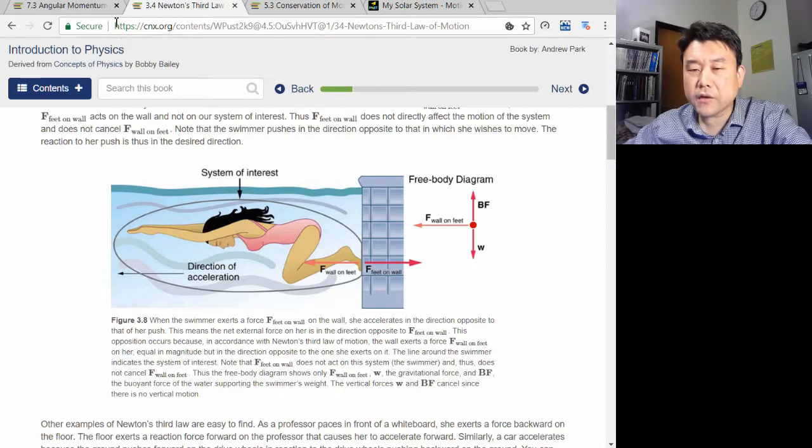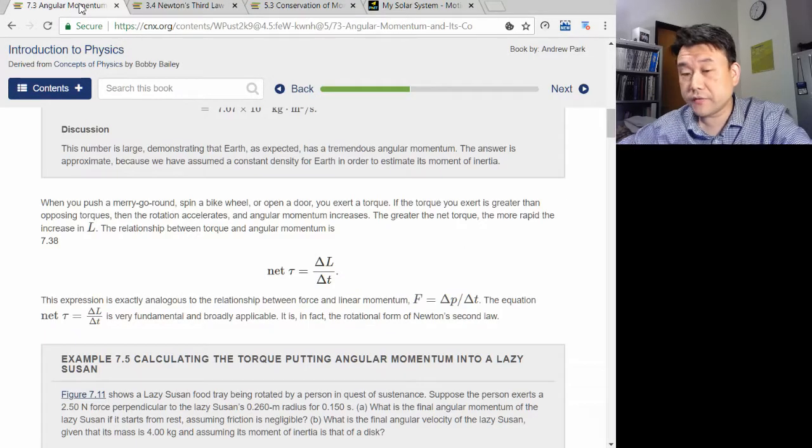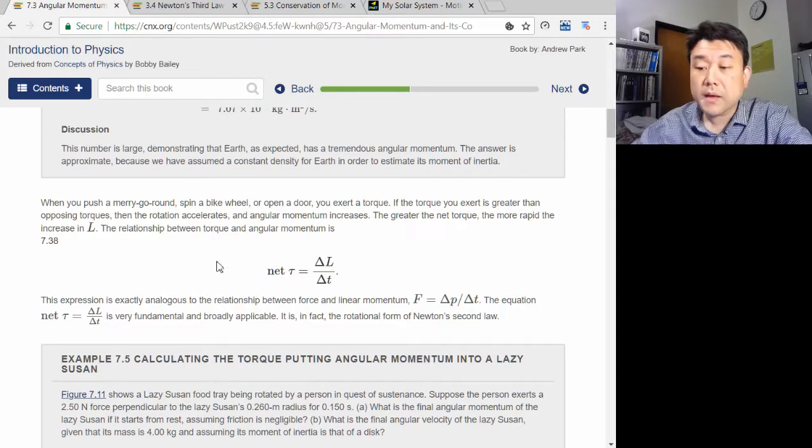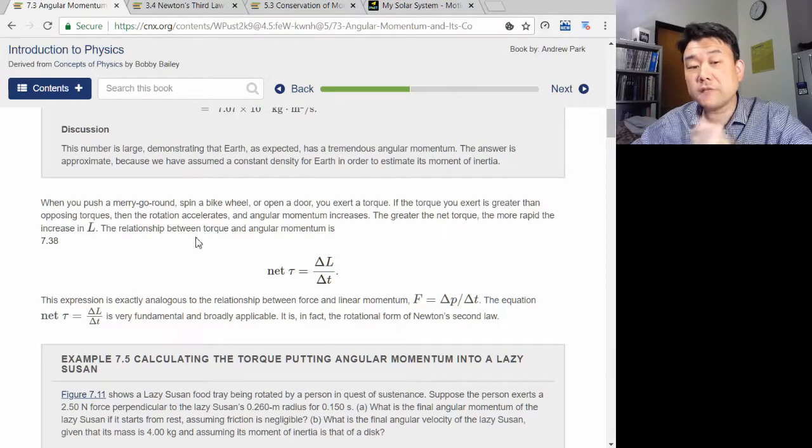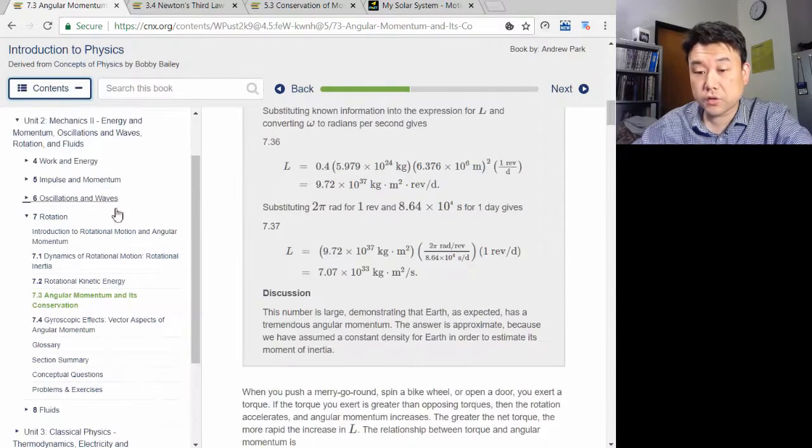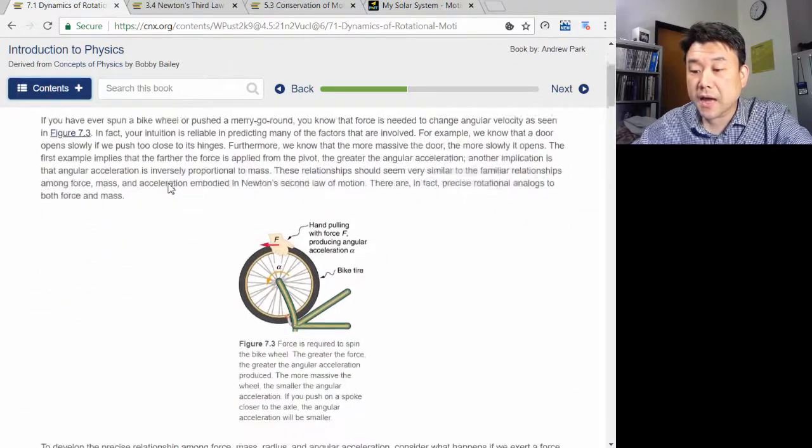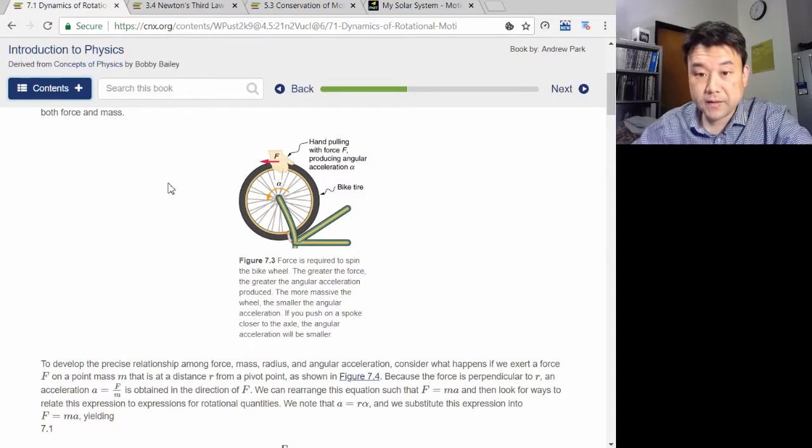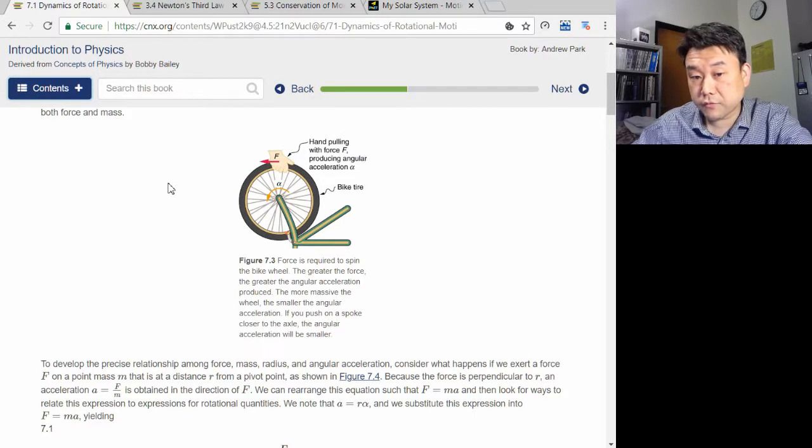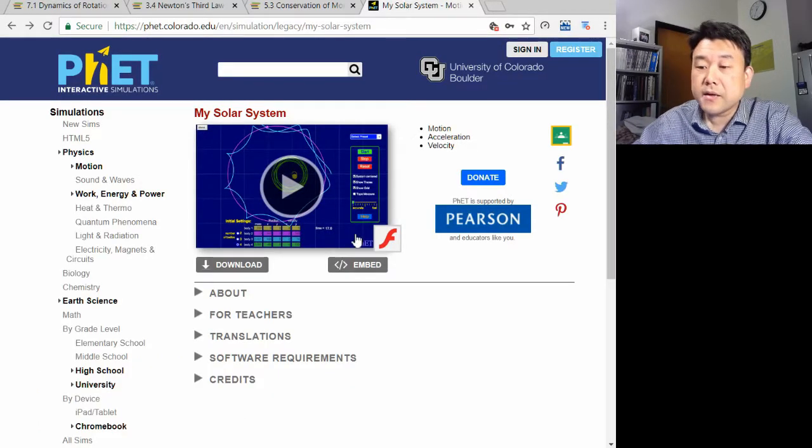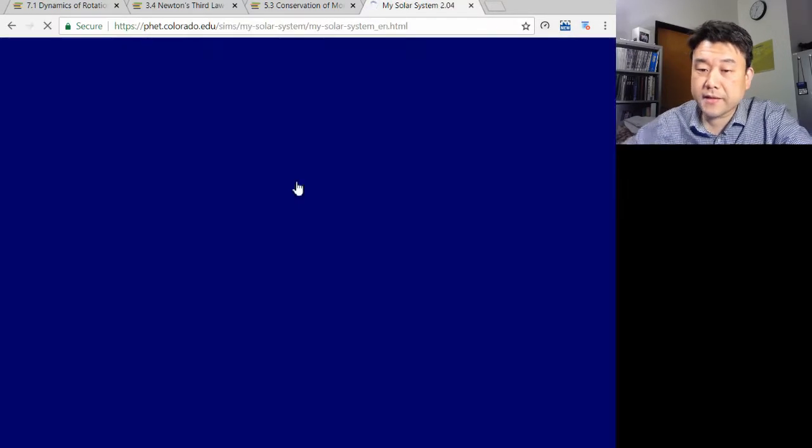Another way angular momentum can be conserved is if the applied torque is zero. And you can have zero torque with non-zero force. If you remember, torque is force times lever arm. This is what causes things to rotate.